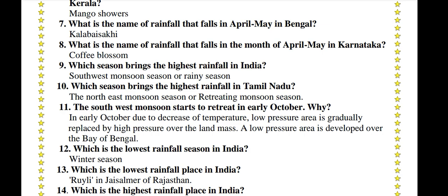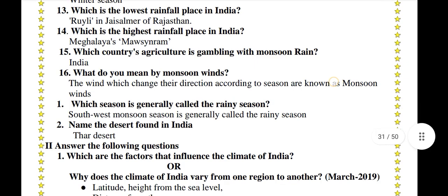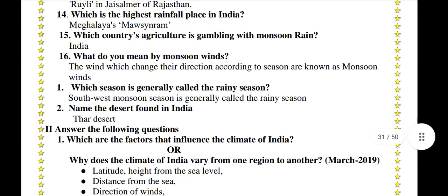Which is the lowest rainfall season in India? Winter season. Which is the lowest rainfall place in India? Rawli in Jaisalmer, Rajasthan. Which is the highest rainfall place in India? Meghalaya, or Mawsynram.